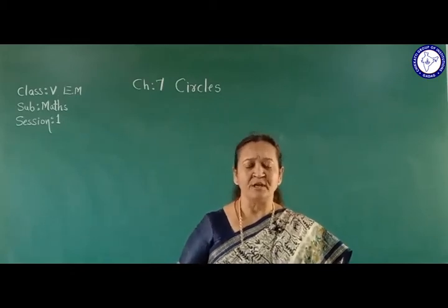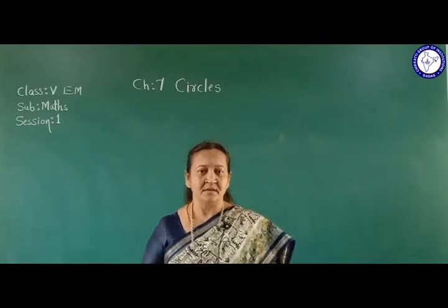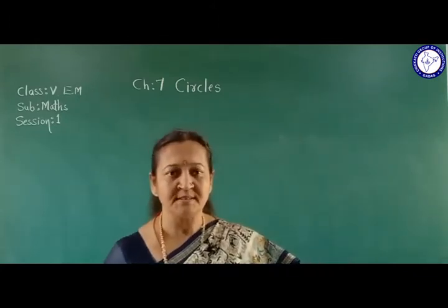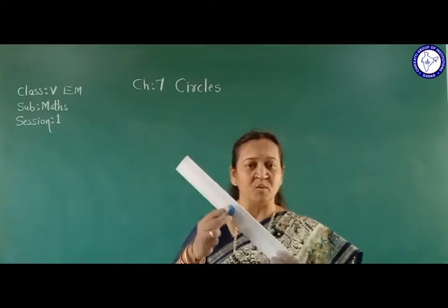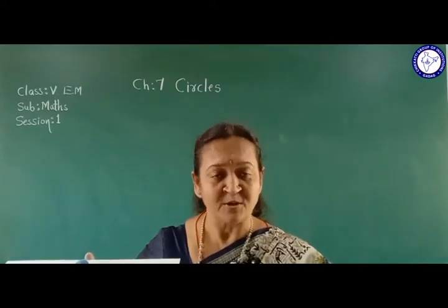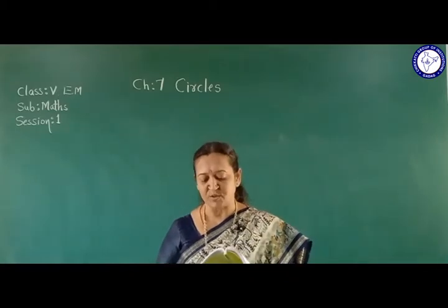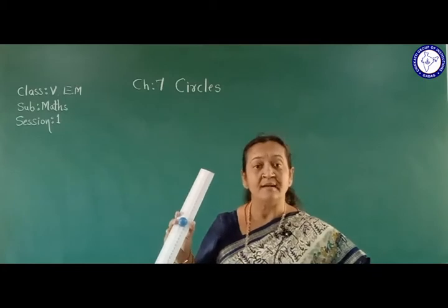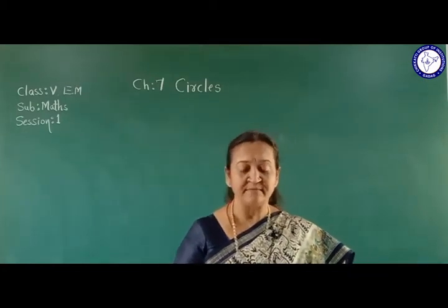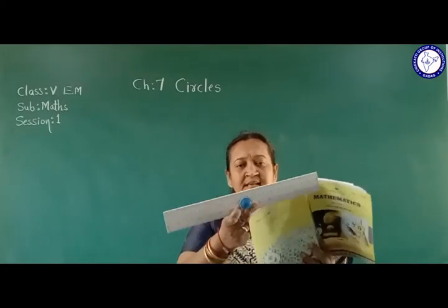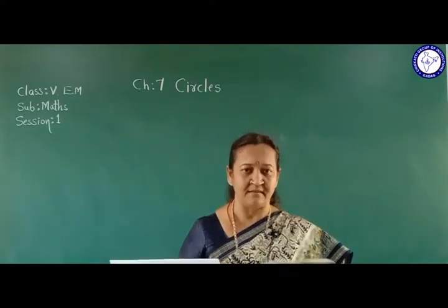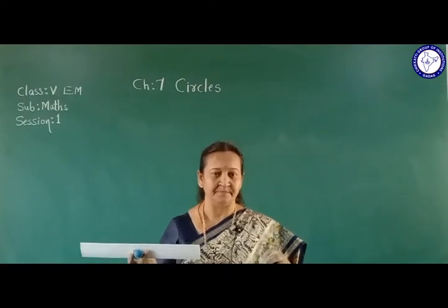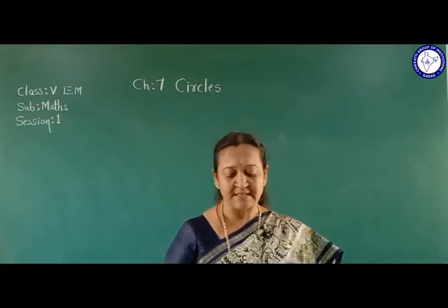Before going to construction, let me introduce the instruments used in geometrical construction. Here in the geometry box we find the first one - the ruler. This is the ruler, also called a scale. It is used to draw straight lines and line segments. This scale is also used to measure any length - for example, the side of this book, the length of a thread, or the length of a pencil.